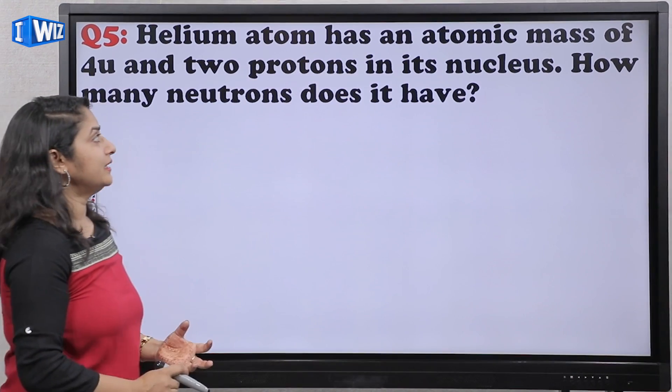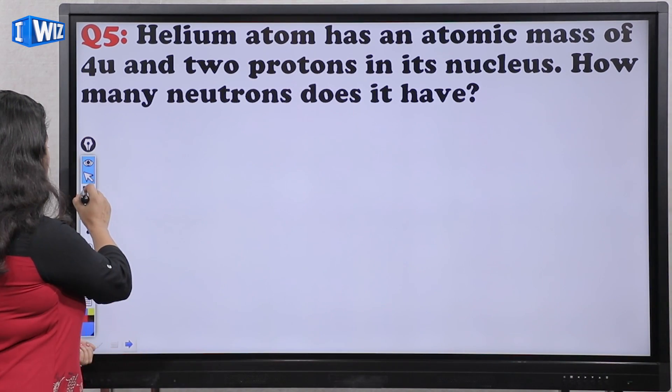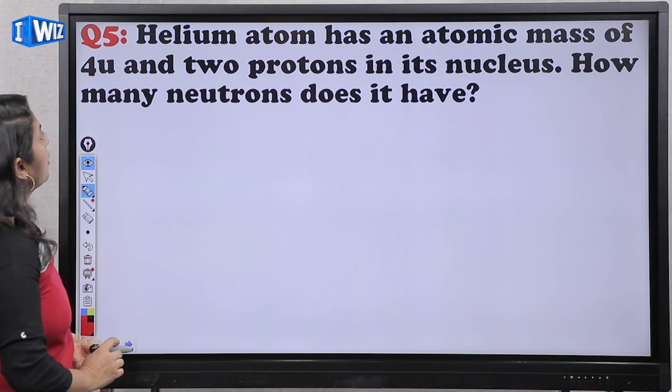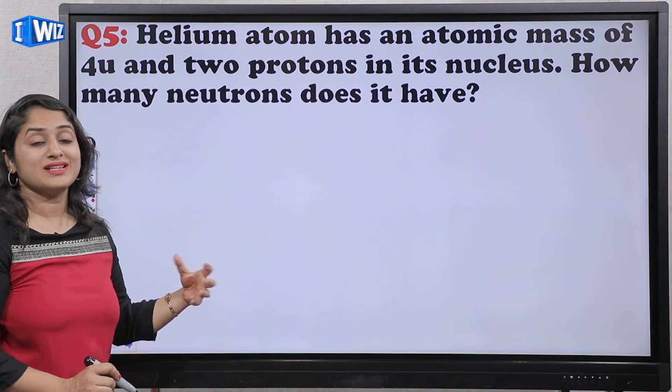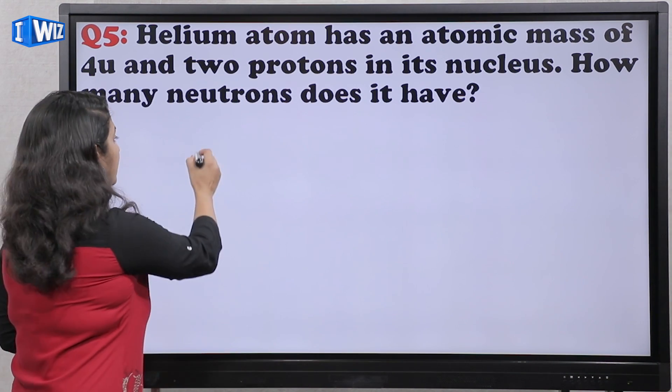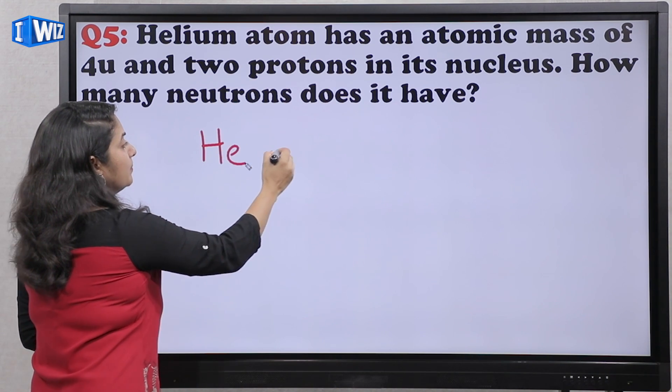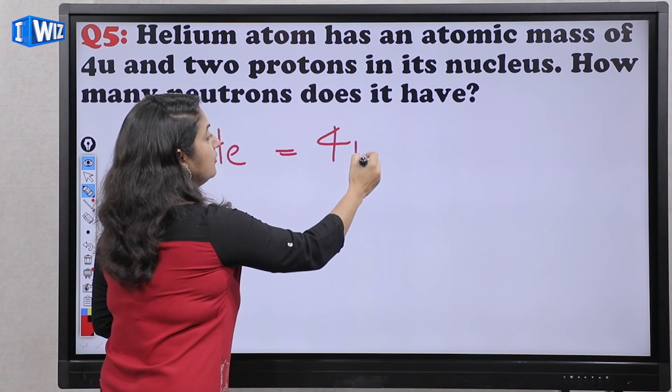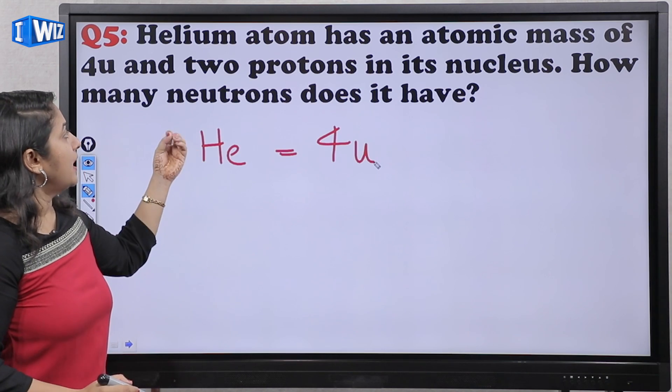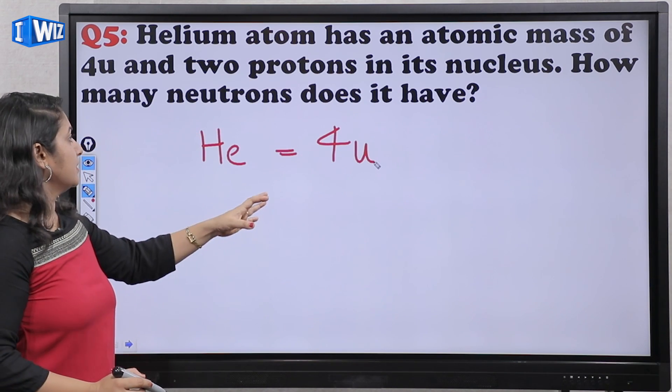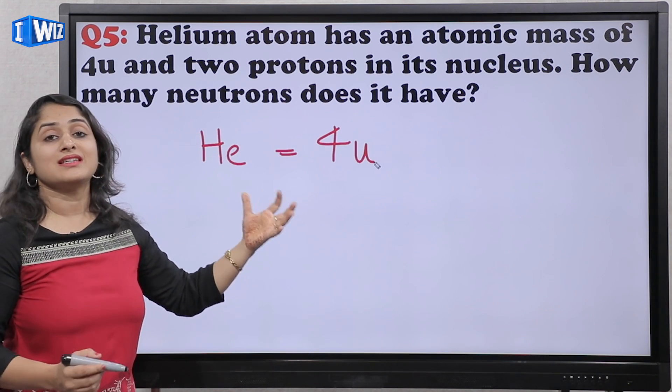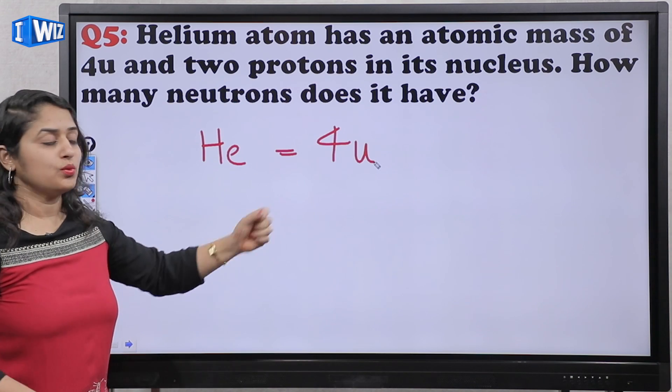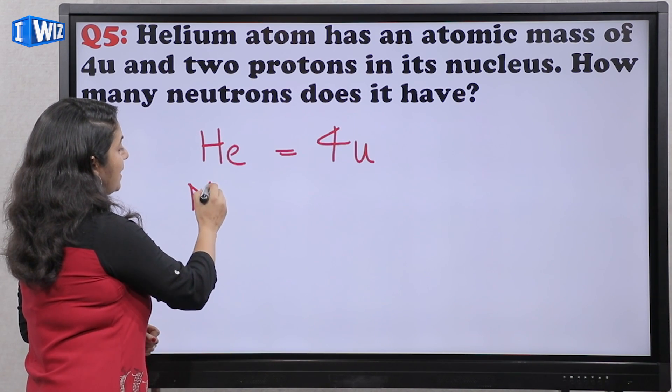Next is: Helium atom has atomic mass of 4u. U is unified mass. Ki jo helium atom hai, uska atomic mass hum kahte hai ki 4u hai. And two protons in its nucleus. How many neutrons does it have? Ye jo 4u hai, ye hai helium ka mass number.